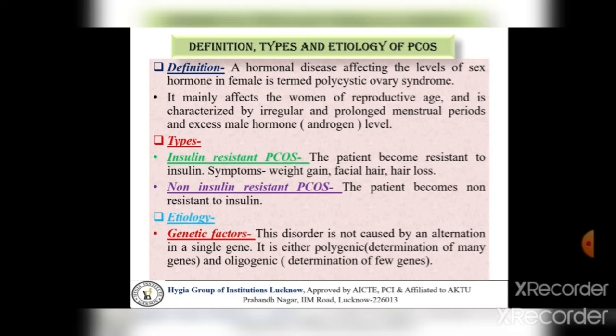Etiology: PCOS के लिए कुछ basic factors responsible होते हैं। पहला है genetic factors — this disorder is not caused by an alteration in a single gene। जो PCOS होता है वो किसी single gene में alteration की वजह से cause नहीं होता है। It is either polygenic determination of many genes or oligogenic determination of few genes। यह basically या तो polygenic condition में हो सकता है, जिसमें ज़्यादा genes involved हो सकते हैं, या फिर oligogenic condition में हो सकता है जिसमें कुछ genes involved होते हैं।